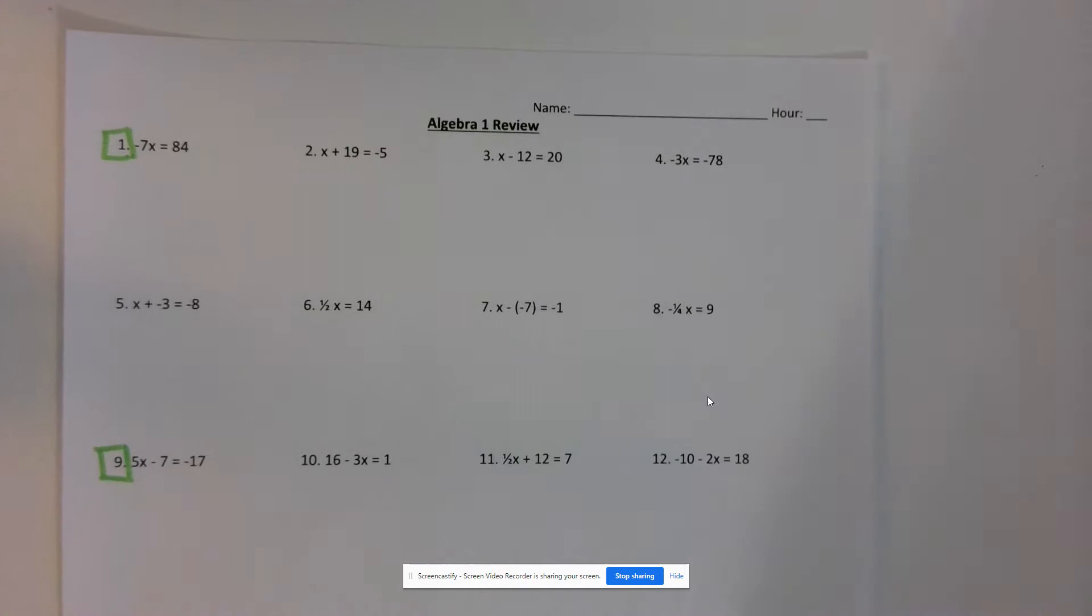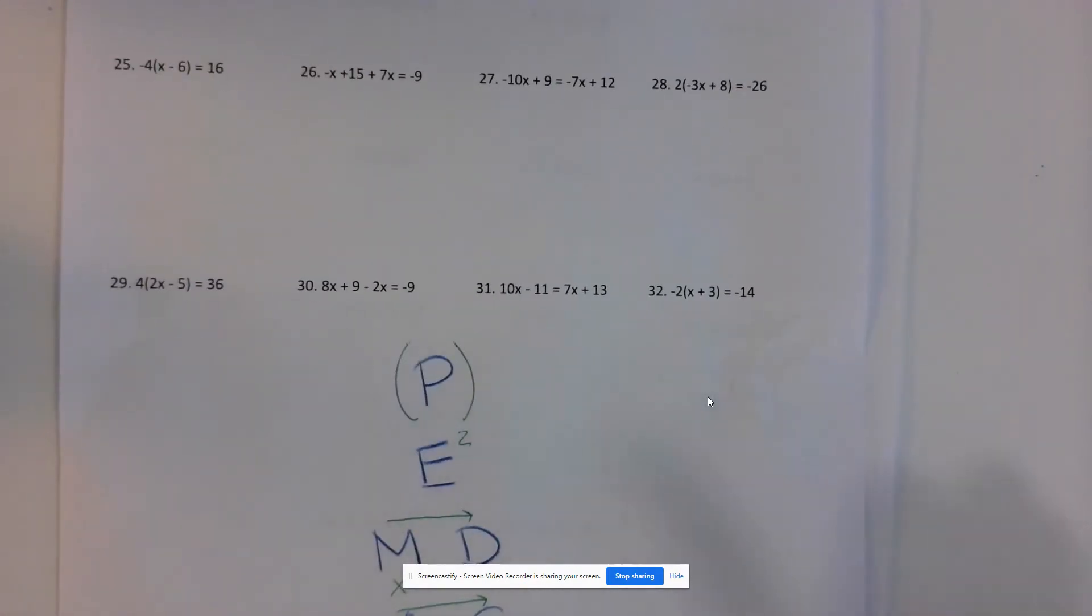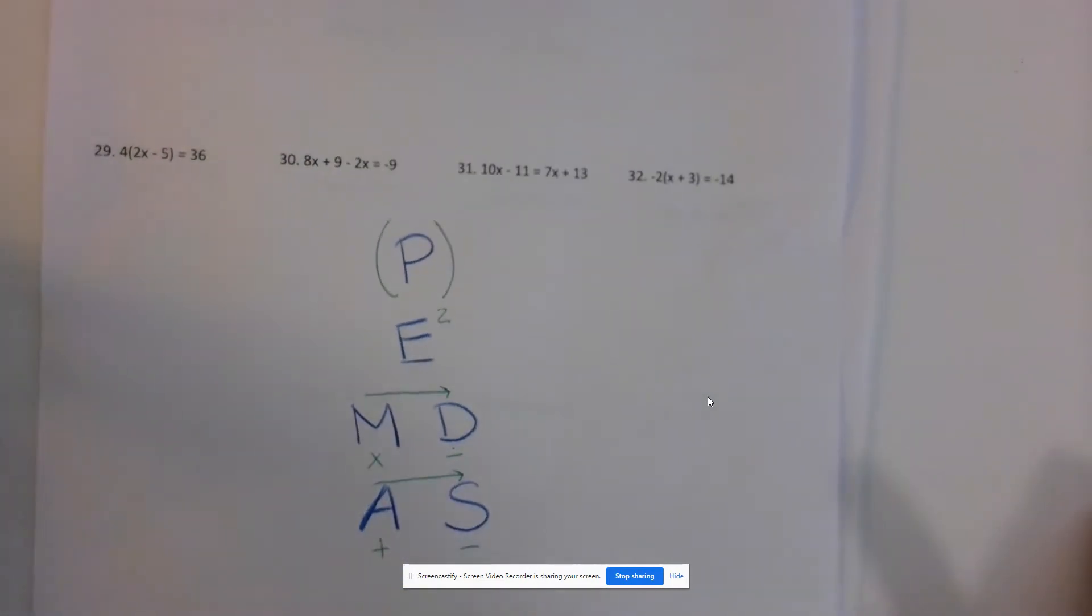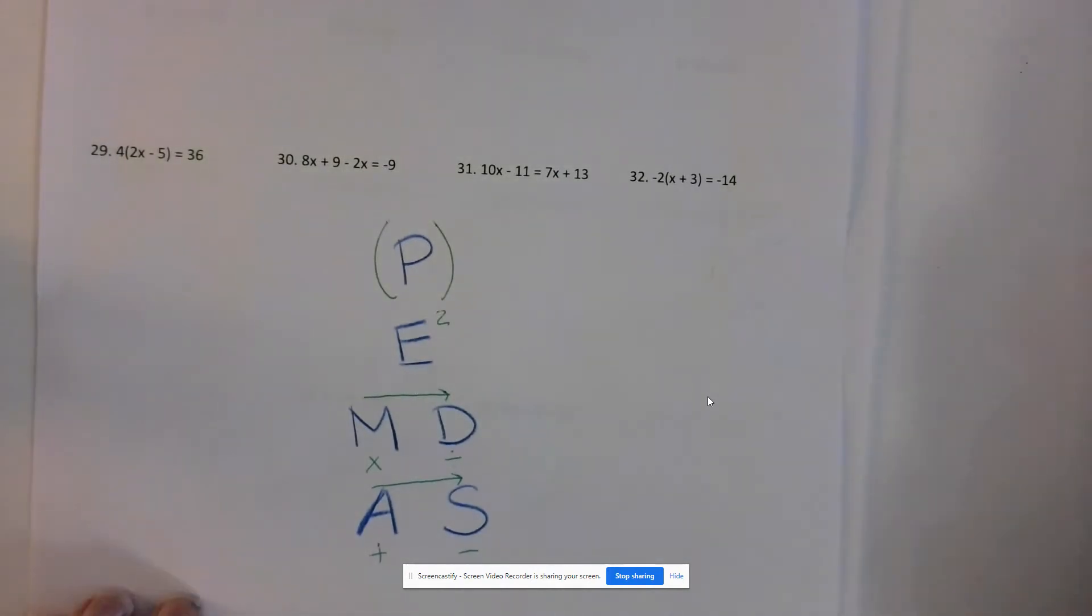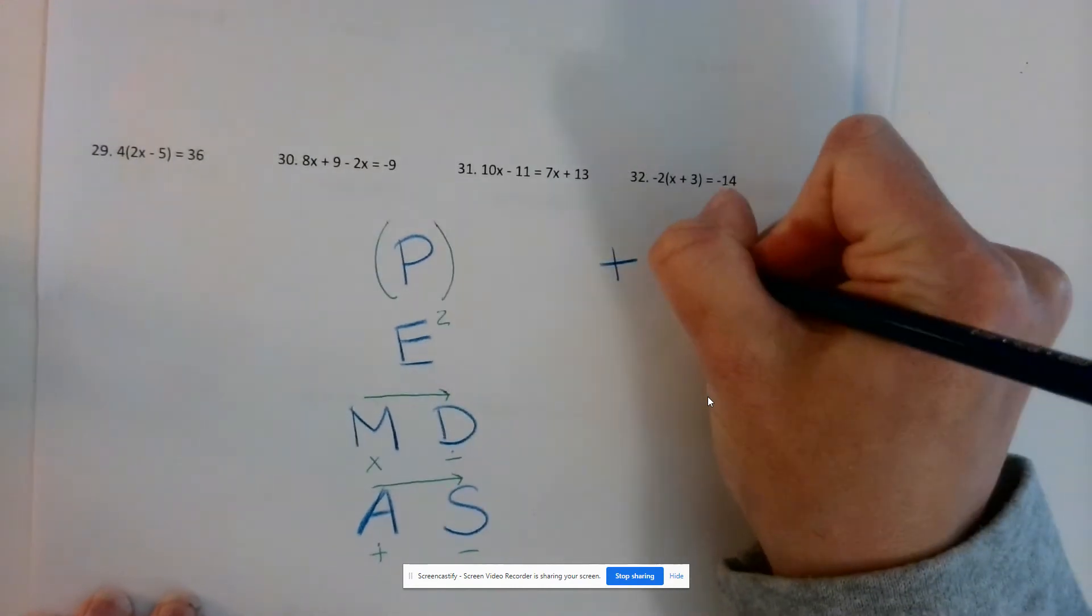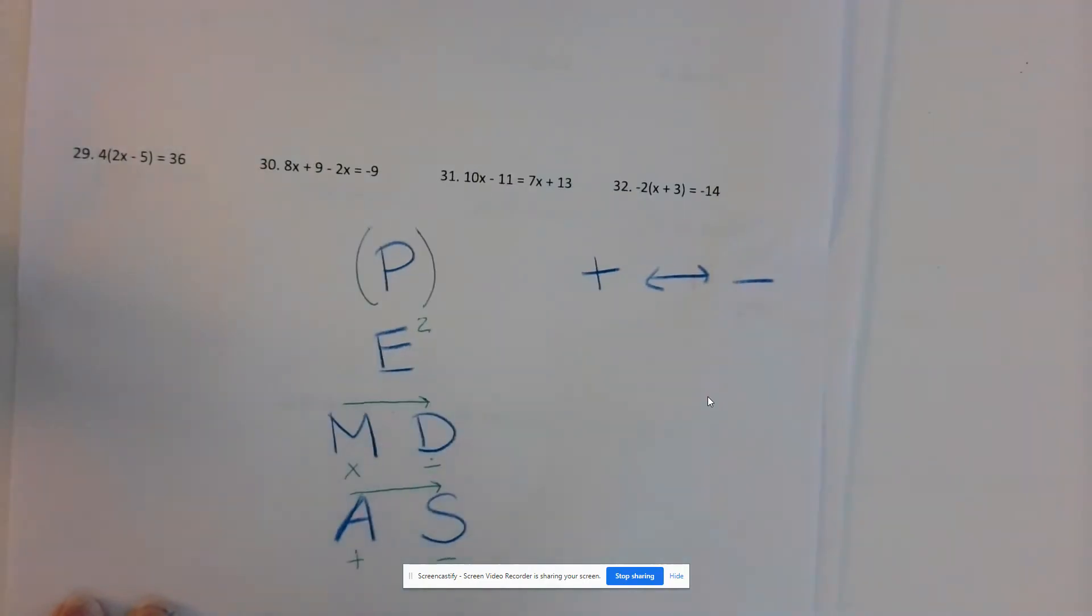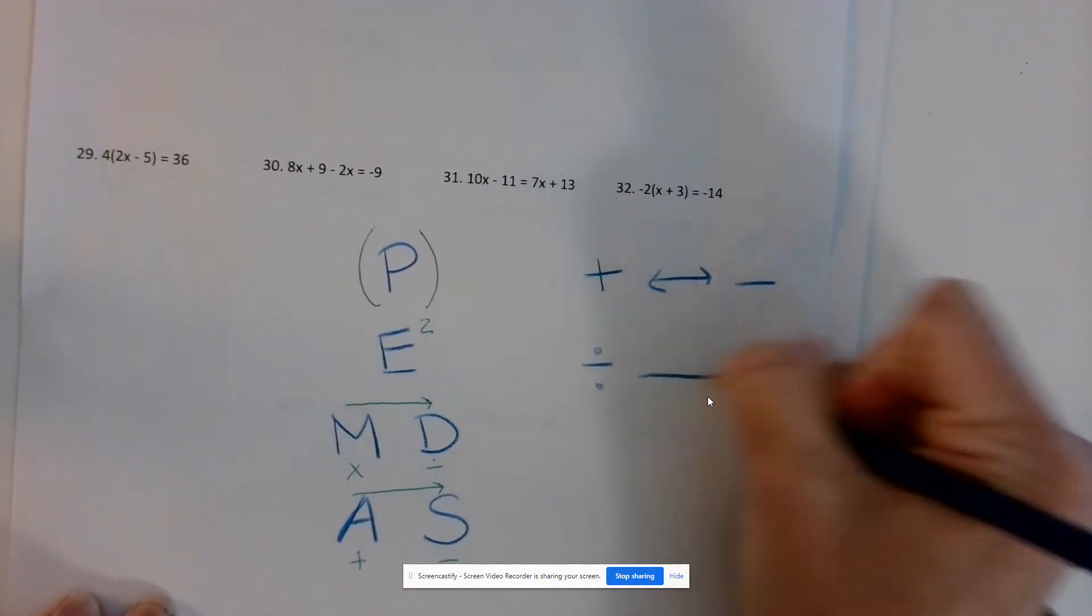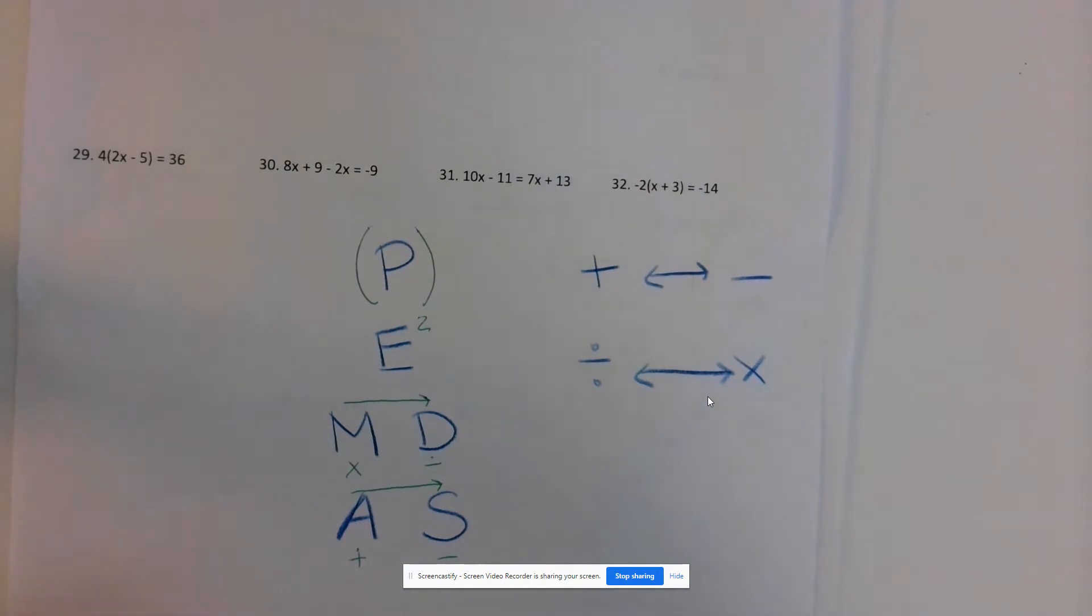Can you please turn your paper over? I have a helpful little visual in case we've forgotten some of our solving equation skills. When we solve equations, we're using inverse operations. We want to undo our operations to solve for our variable. Addition and subtraction undo each other. Division and multiplication undo each other. Those are inverse operations you'll use most frequently.